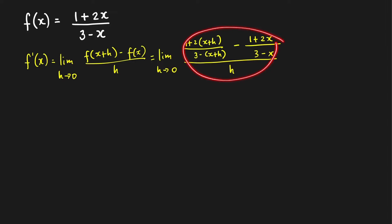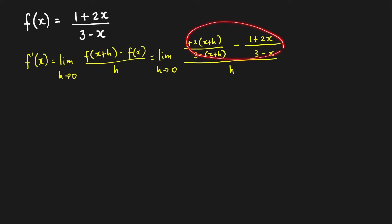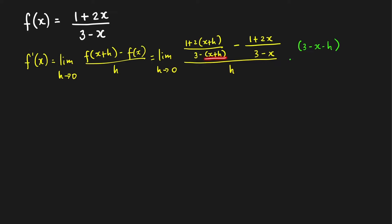Now this is a complex fraction. How do you simplify a complex fraction in algebra? You multiply the numerator and denominator by the LCD of the fractions in the numerator and denominator — but we only have fractions in the numerator. So the LCD here is just the product of these two denominators, which is 3 minus x minus h — because when we remove the grouping symbol, this becomes minus x minus h — times 3 minus x. We also multiply the denominator by this: 3 minus x minus h, times 3 minus x.